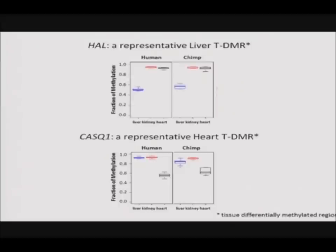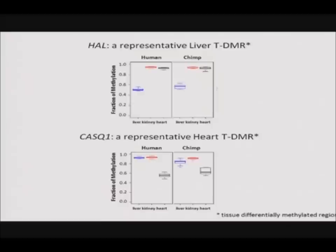The first focus is on evidence for tissue-differentially methylated regions, which show signatures like the two representative examples shown here. In the gene HAL, the liver is significantly differentially methylated compared to consistent kidney and heart methylation values. The second example is a heart-specific TDMR called CASQ1. We identified these regions specific to each species independently in each tissue, then looked at the regions that overlap between the two species.